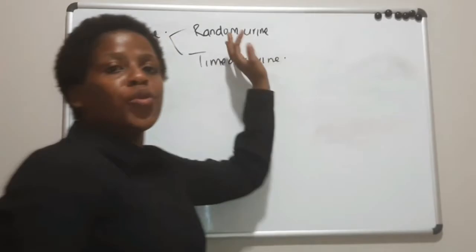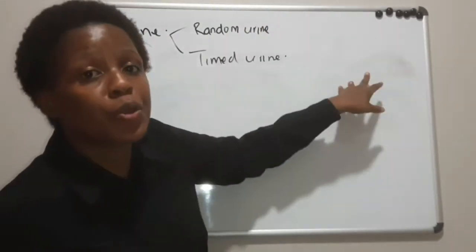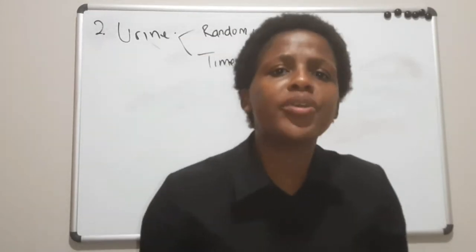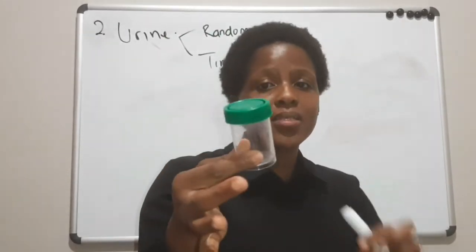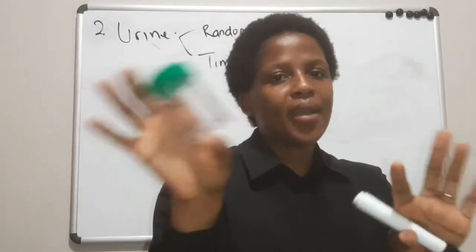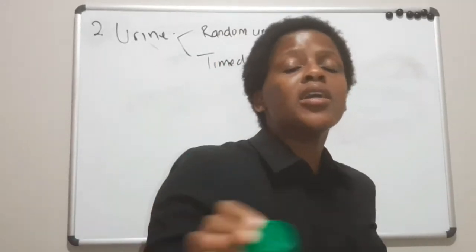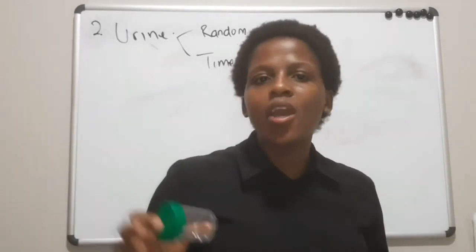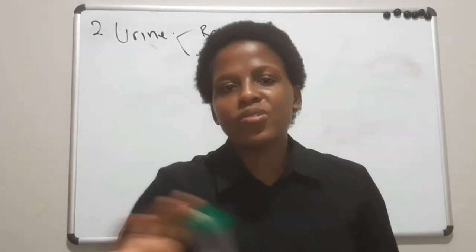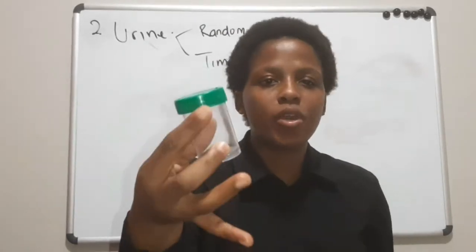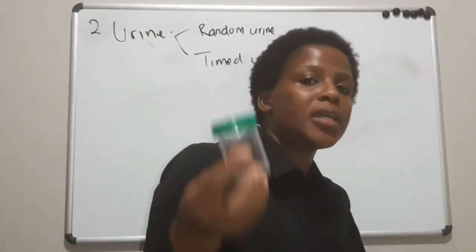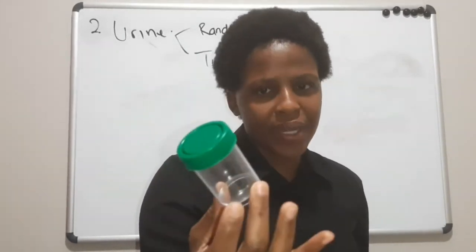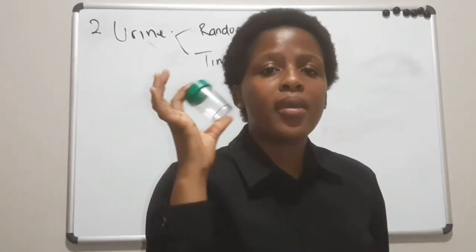The next sample type is urine. With urine, you can either receive a random urine or a timed urine. Random urine is urine collected in a container — most of the time there is no preservative in it. You just go to the clinic any time, give the container, urinate in it, and bring it to the laboratory.